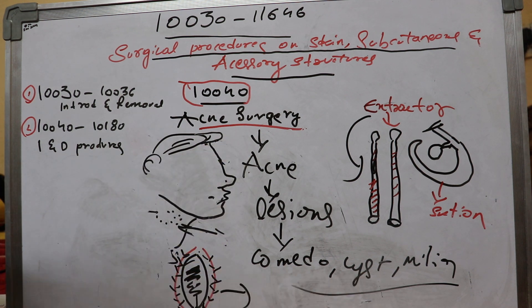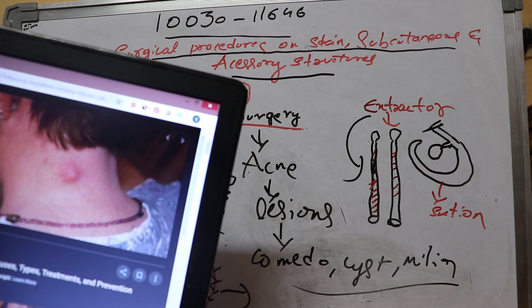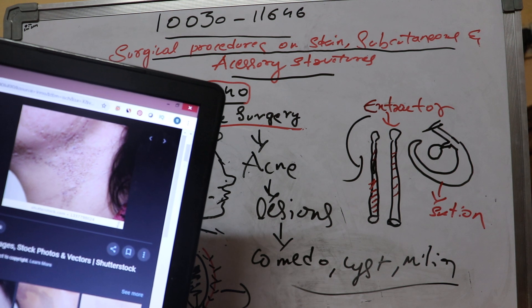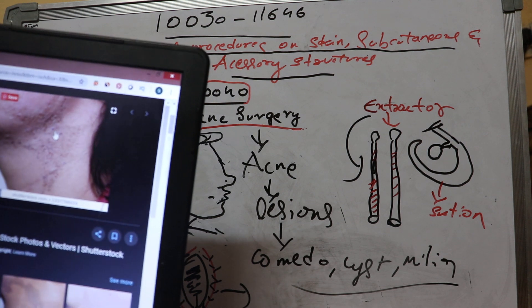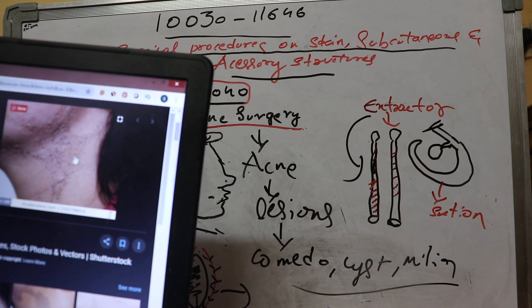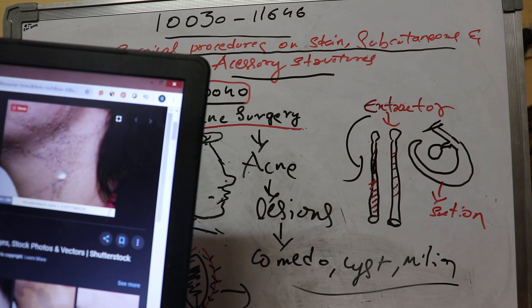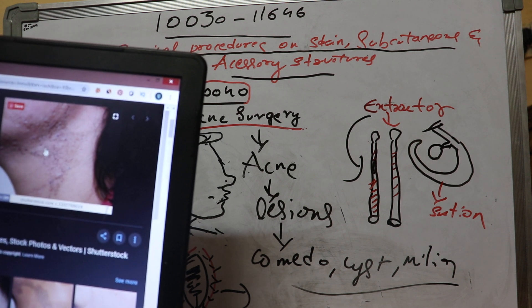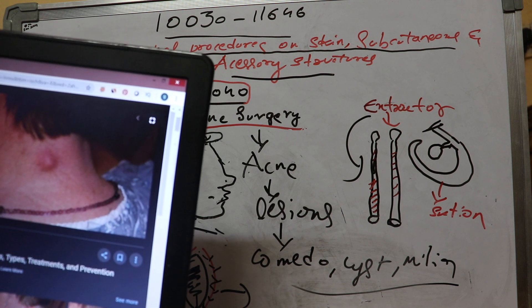To give you an idea, I will show you the comedos and cysts. Here you can see the structure of the neck — there are some small black-colored pores, skin pores. This is the comedo. These are hair follicles filled with oil or dead skin cells. This is a type of acne, nothing but a lesion.